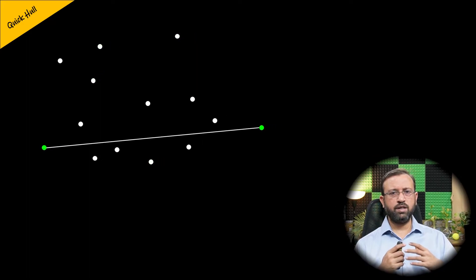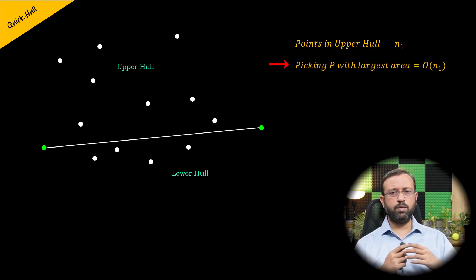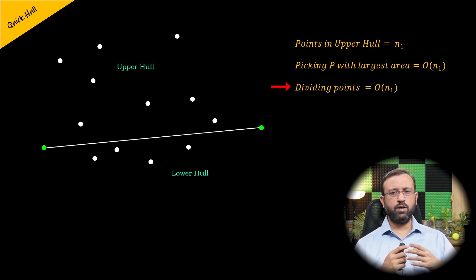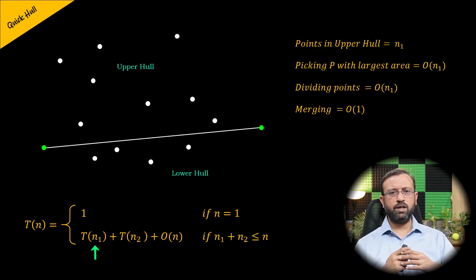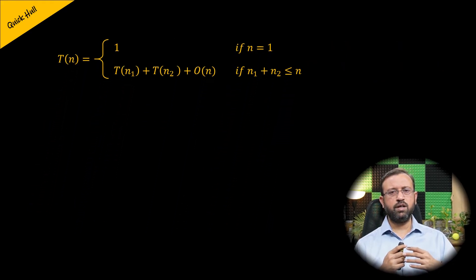Let us analyze the quick hull method. If there are n1 points in the upper hull, then picking the point P with the largest area can be done in O(n1) time, and partitioning or dividing the points into upper and lower hull can also be done in O(n1) time. Merging the upper and lower hull can be done in O(1) time. Therefore, for n points, the recurrence relation T(n) = 1 when n = 1, and letting n1 and n2 denote the sizes of the upper and lower hull with n1 + n2 ≤ n, T(n) = T(n1) + T(n2) + O(n).